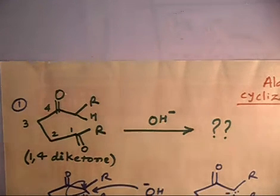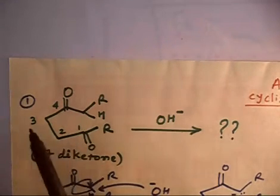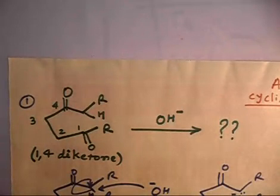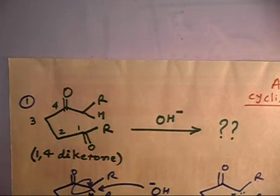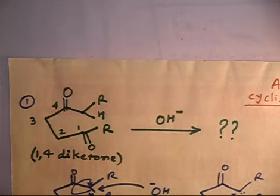Now you have to write down the product for this reaction. This is a 1,4-diketone — positions one, two, three, four — with keto groups at position one and position four. If you treat with OH⁻, what will be the product? You have to write down the condensation product, that is after loss of water. I will give you one minute and you have to draw the product.